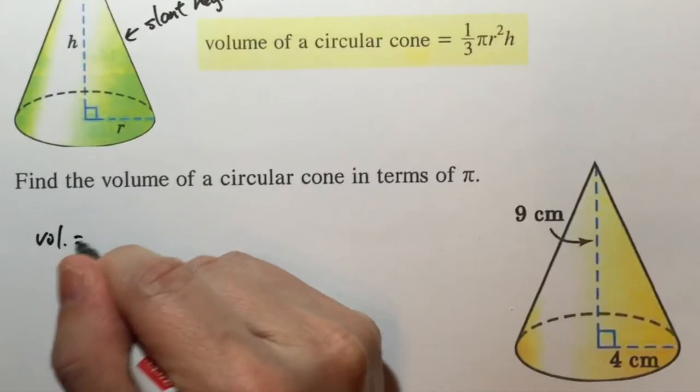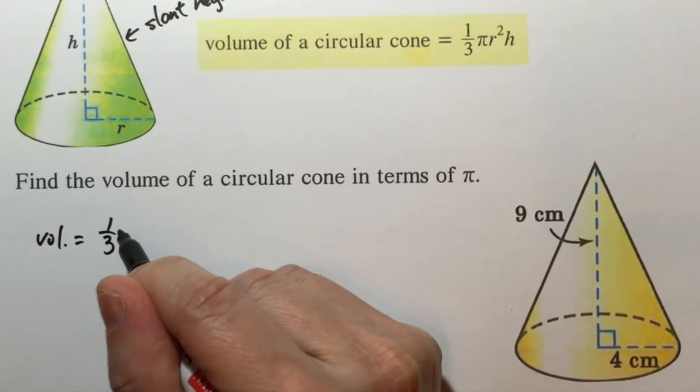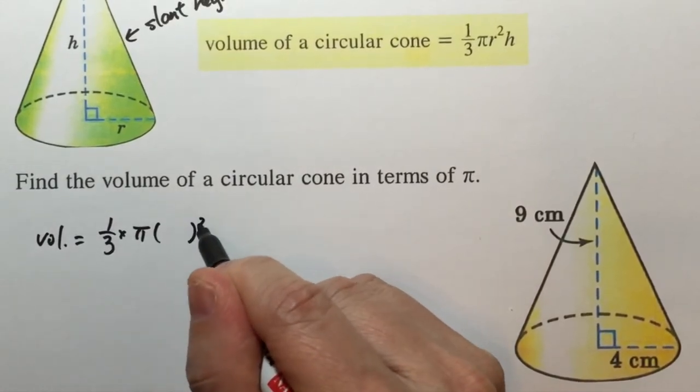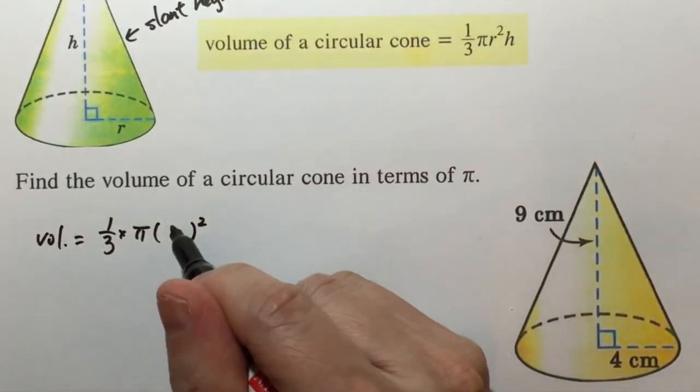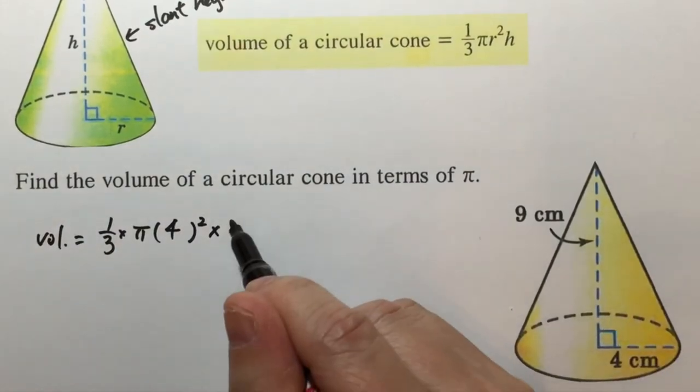Therefore volume is one third times pi r squared. r is 4 cm and the height is 9 cm.